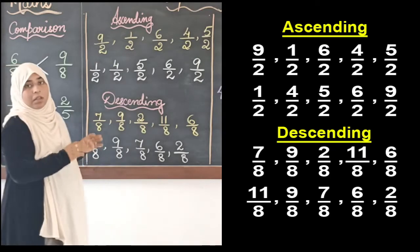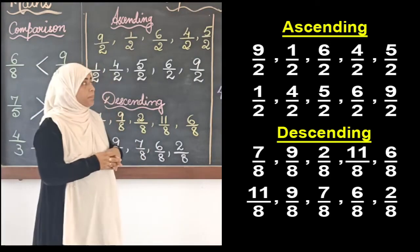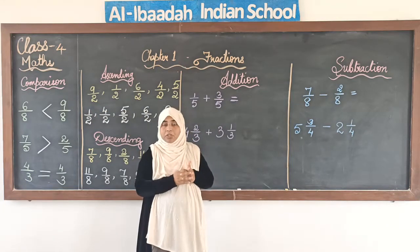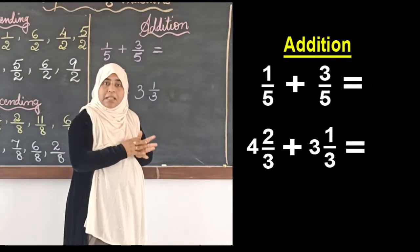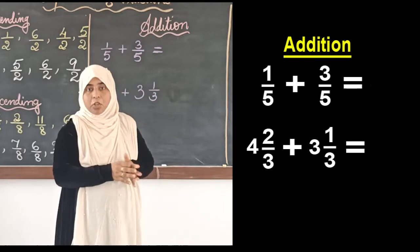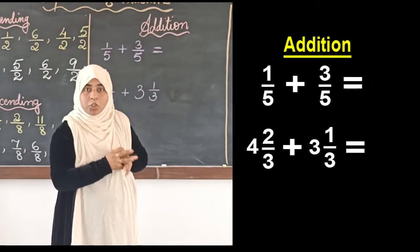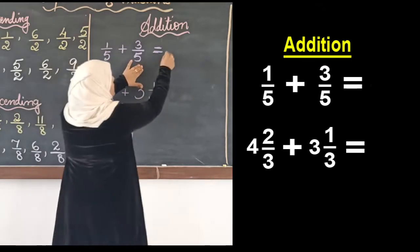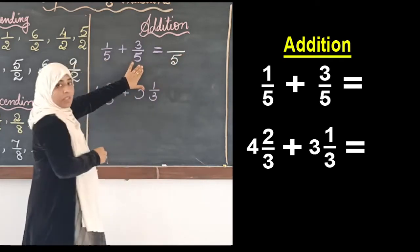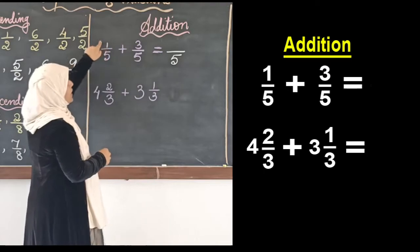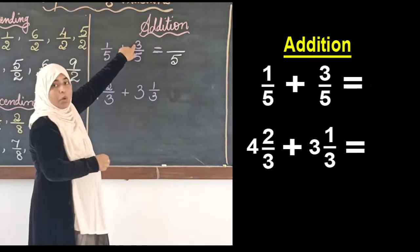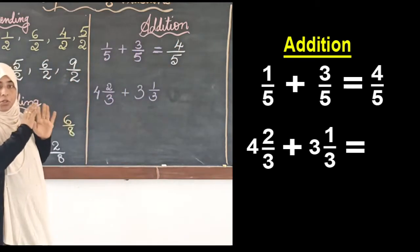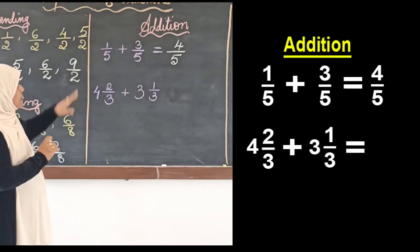Now we look at addition of like fractions. Addition of like fractions is very simple — the denominators are the same, so in the answer we keep the same denominator and simply add the numerators. The first example is 1/5 plus 3/5. The denominator for the answer remains 5, and we add only the numerators: 1 plus 3 equals 4, so the answer is 4/5.